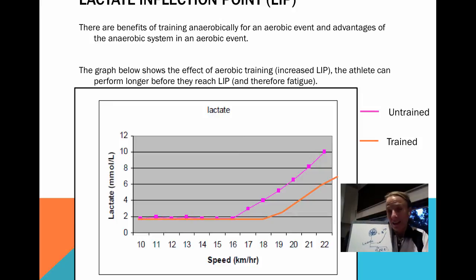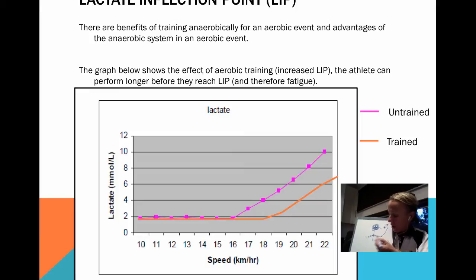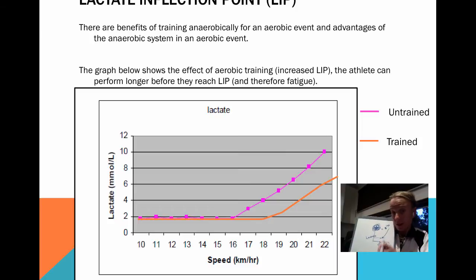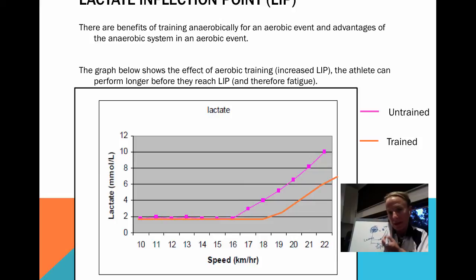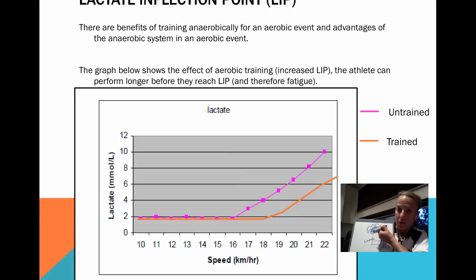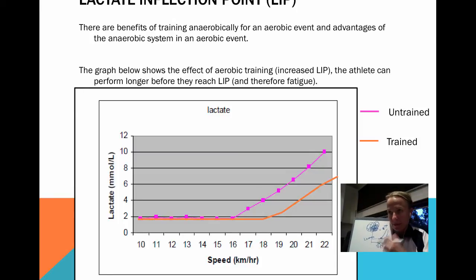With aerobic training, you delay the point at which accumulation exceeds removal. For this athlete, they reach their LIP at about 16 kilometers per hour. With training, as you can see on the graph, the athlete can now go to 18 kilometers per hour — performing at higher intensities before fatigue sets in. As soon as you go past that Lactate Inflection Point, your body accumulates lactate quicker than you can remove it, muscles become acidic, and muscular contractions are impaired.